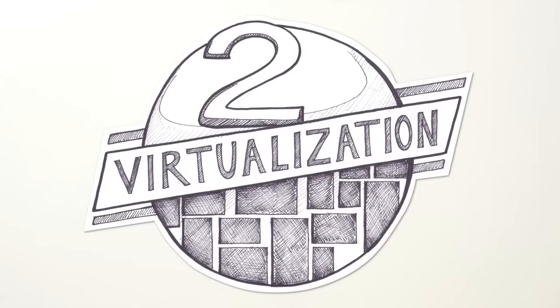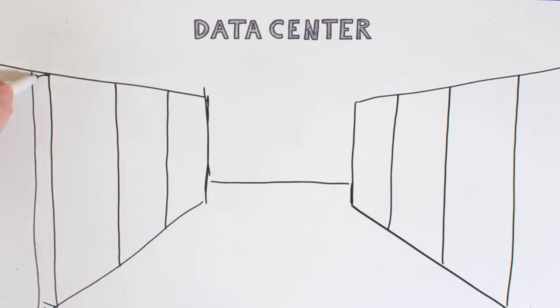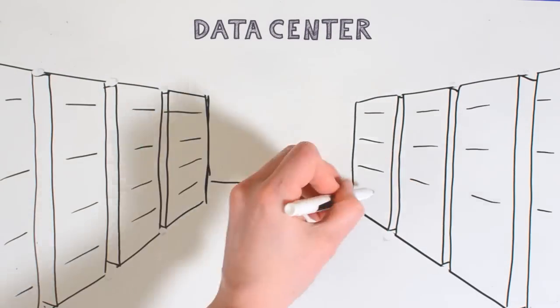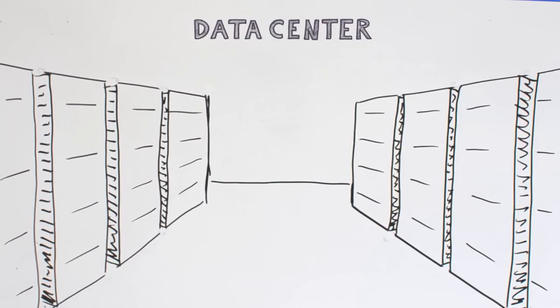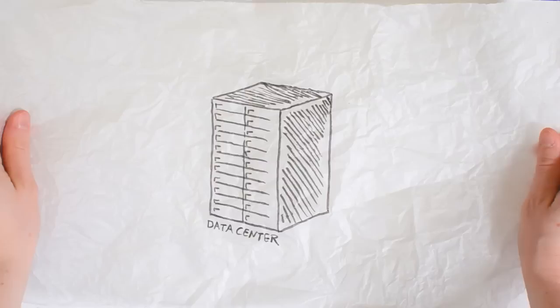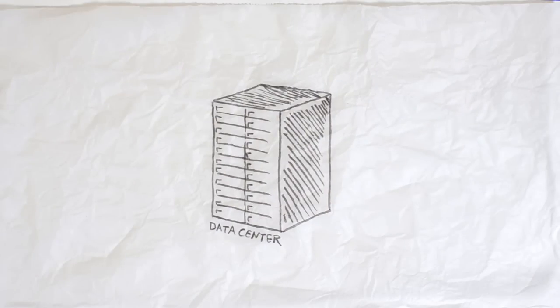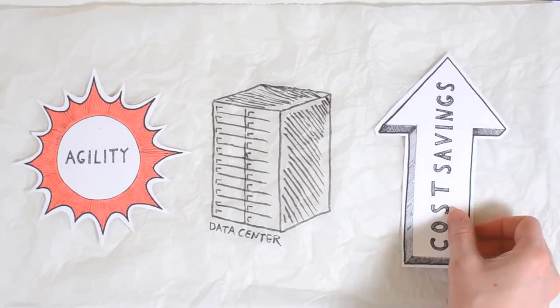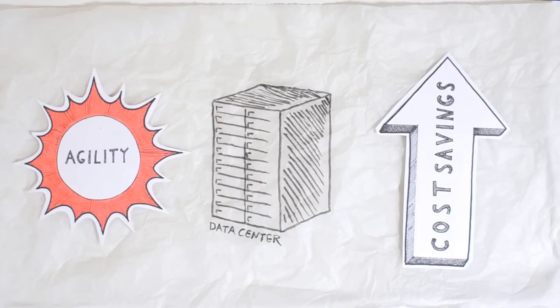Step 2 is virtualization. Here, organizations begin to extend their use of tools to continue the move from physical to virtual data center, as well as provide consistent management and capacity planning for increased agility and cost savings.